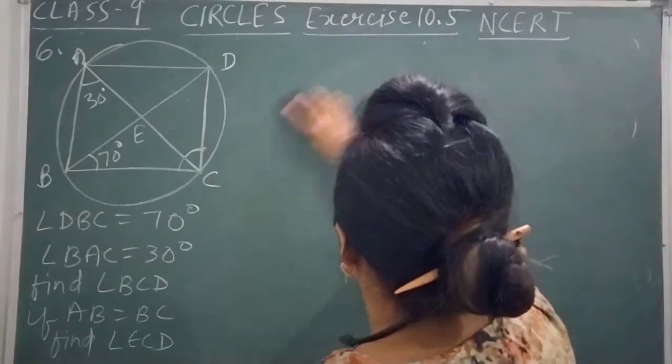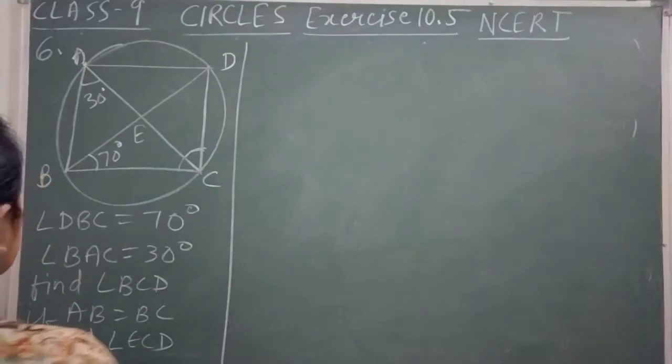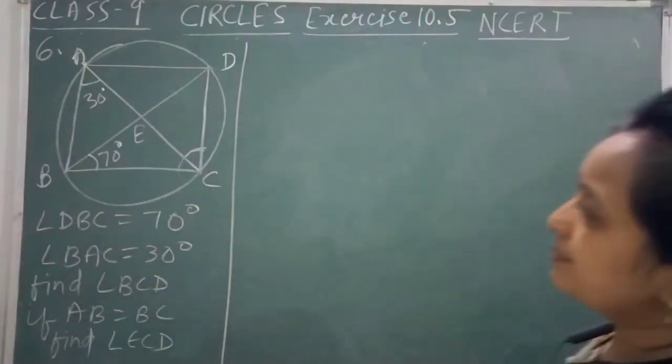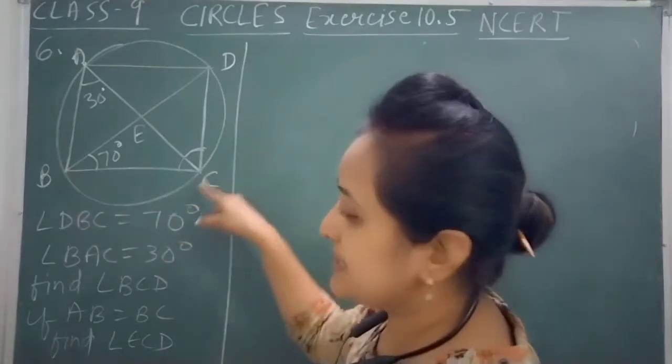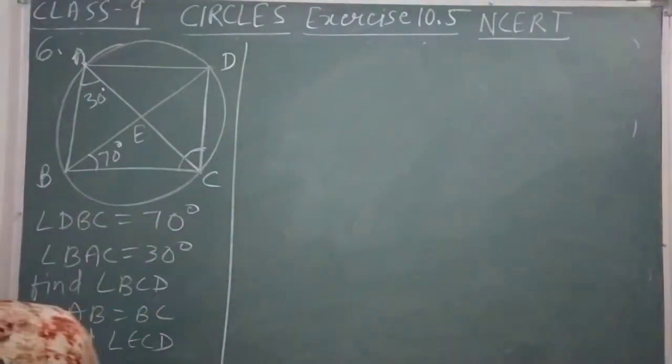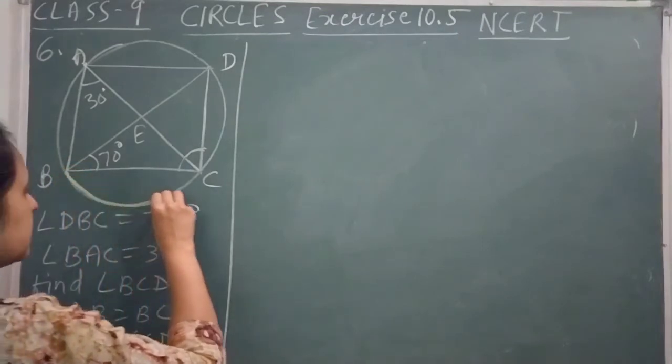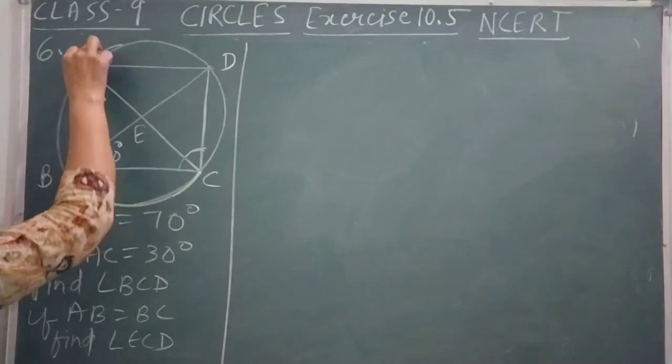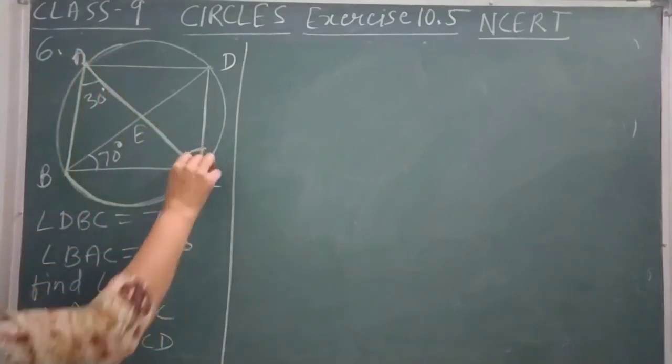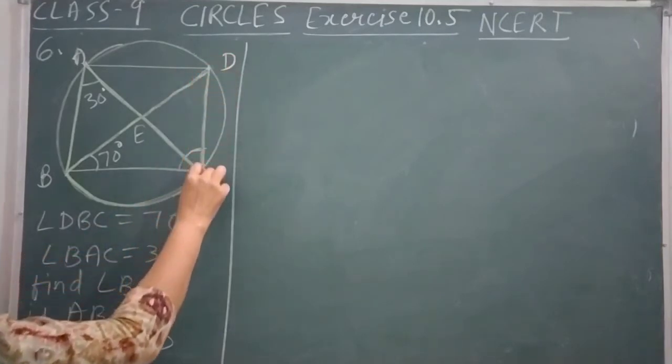We find angle BCD. For that, you can see the same arc BC. On this arc BC, there are two angles: one angle BAC and the other angle BDC.